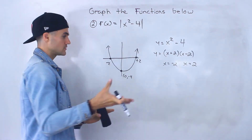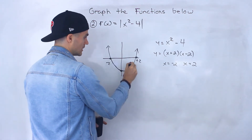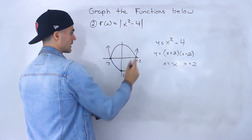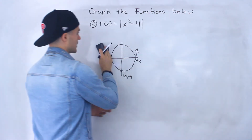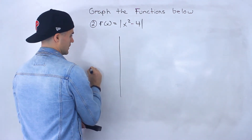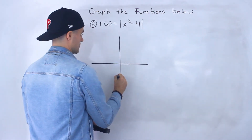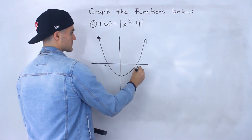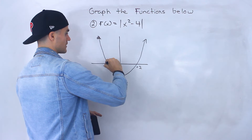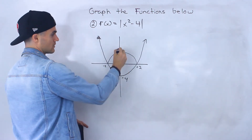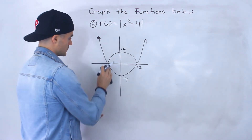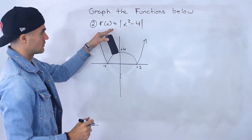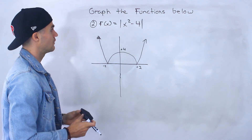That's the graph of x squared minus 4. Now adding the absolute value, we take any negative y-values and flip them over. The negative y-values occur between x equals negative 2 and x equals positive 2. We flip that portion over the x-axis, so what was the vertex at negative 4 is now at positive 4. We erase the original negative portion, and that's the graph of the absolute value of x squared minus 4.